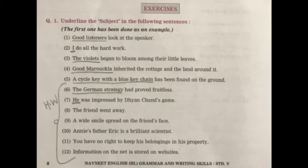'Good Morukla inherited the cottage and the land around it.' 'Inherited' shows the verb — it is showing some action. Who inherited the cottage? Good Morukla. So 'Good Morukla' is your subject and 'inherited the cottage and the land around it' is your predicate.